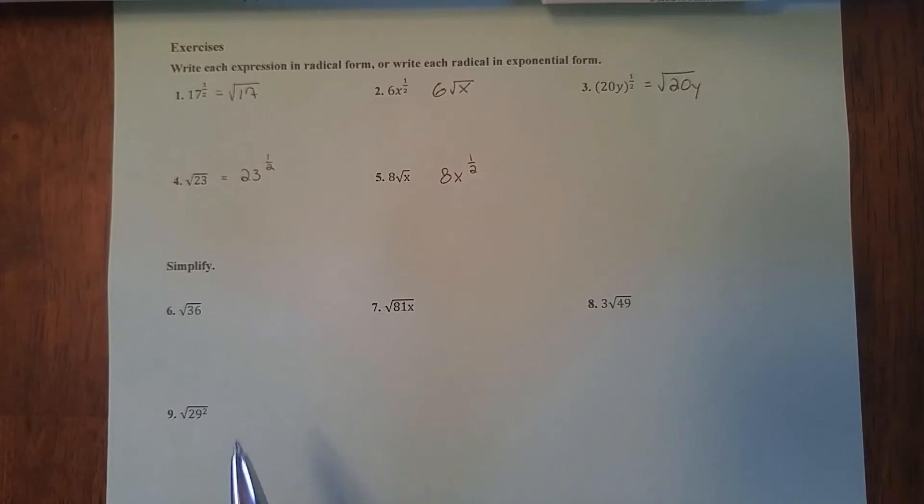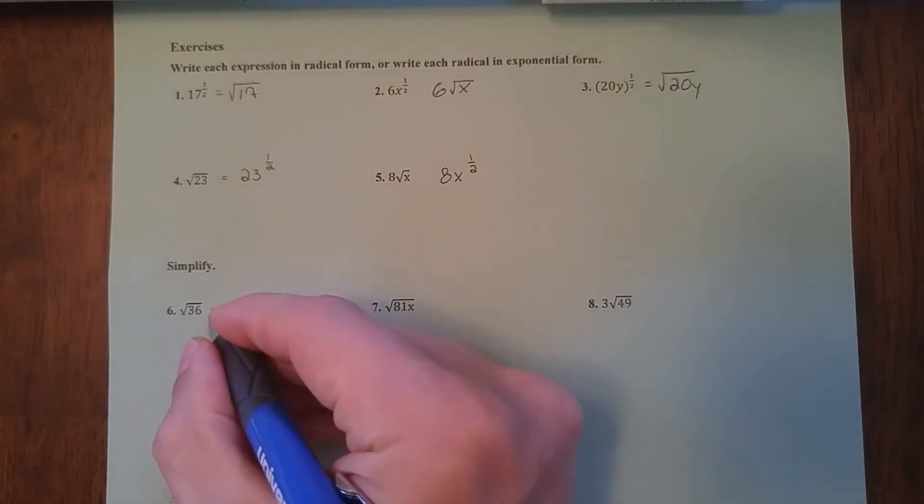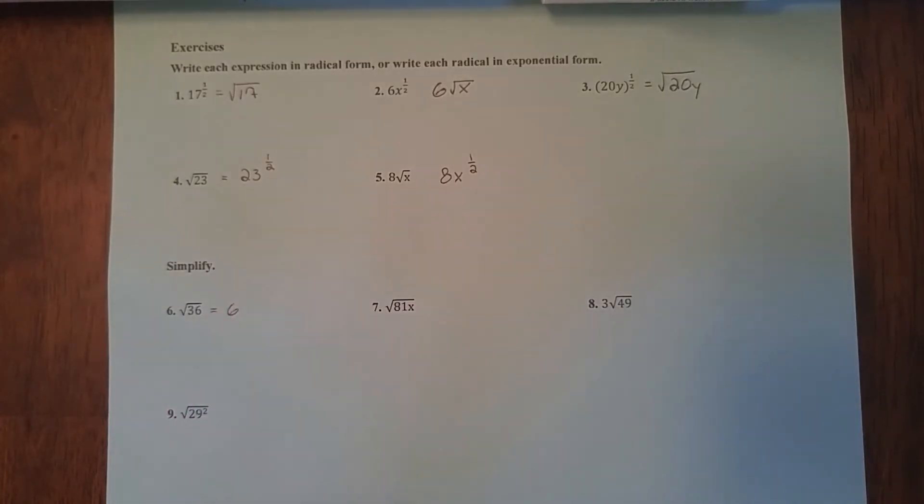Let's take a look at these ones. These ones just tell you to simplify. So what I'm going to do is I'm going to look at each one of these square roots, and I'm going to see if I can break this down at all. Right here, I have square root 36. So I ask myself, is there a number that I can multiply by itself to get 36? And the answer is 6. 6 times 6 is 36.